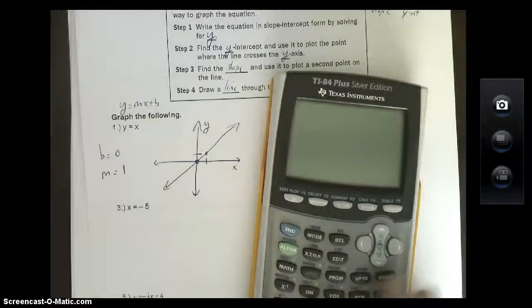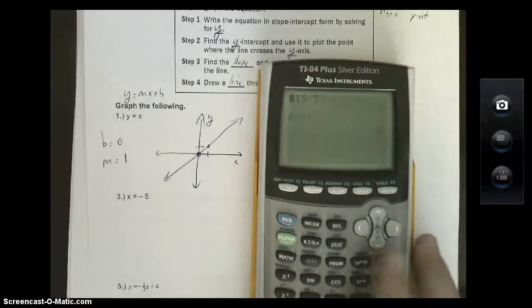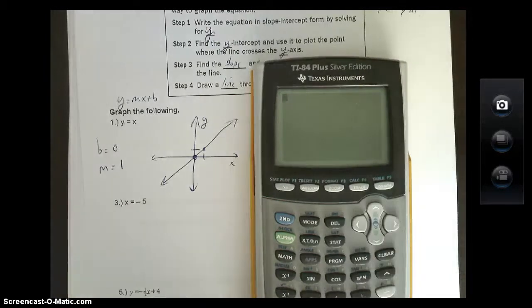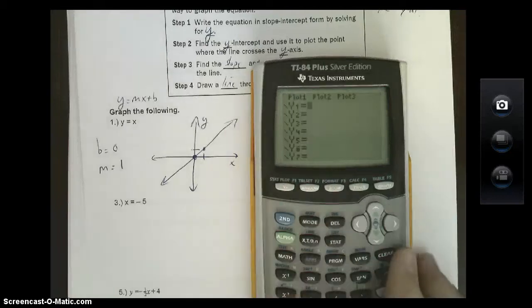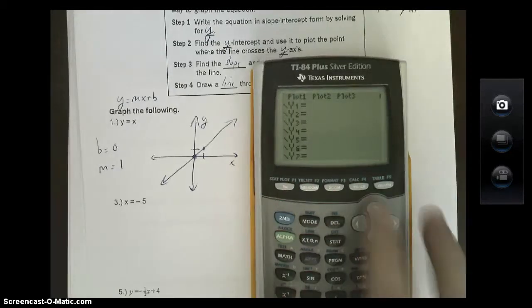Now, to show you via graphing calculator, this is very important. The very top left-hand corner of your calculator is a button called y equals. We're going to hit that. You want to make sure everything's cleared out of here, which in this case it is.